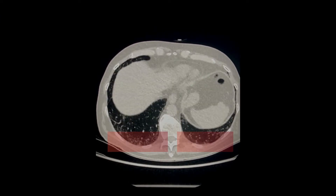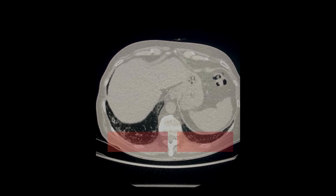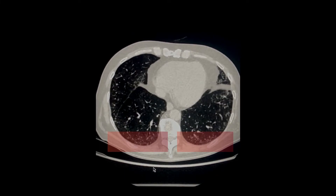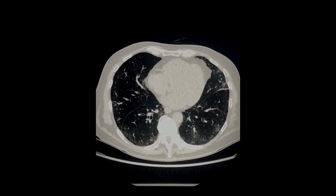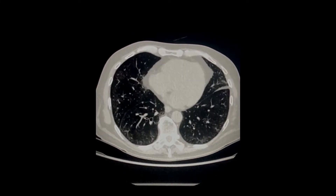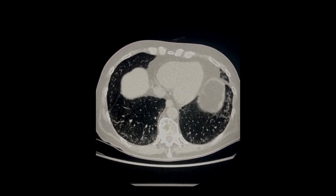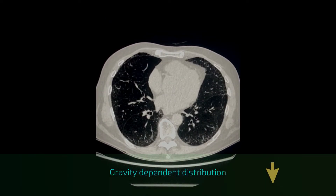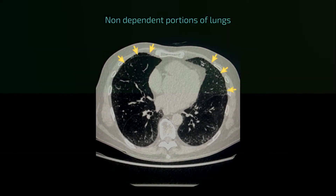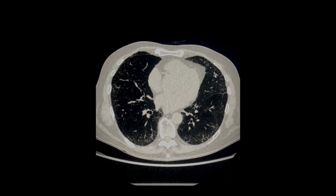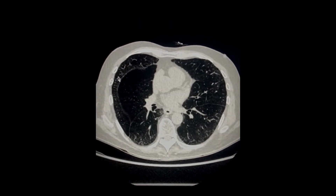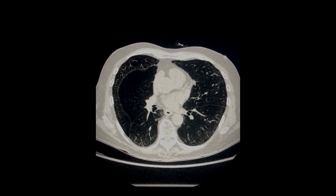If you look at this CT scan here, you would notice that the posterior basal regions have somewhat curved linear areas of atelectasis and some possible intervening ground glass changes. While this does have a gravity-dependent distribution, if you look at part of the non-dependent portions of the lungs, you can see that a similar process may affect these areas as well.